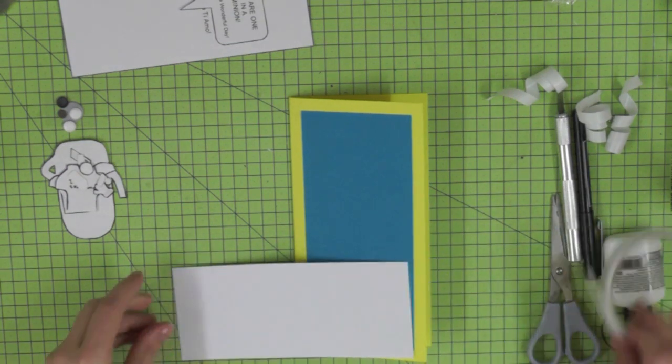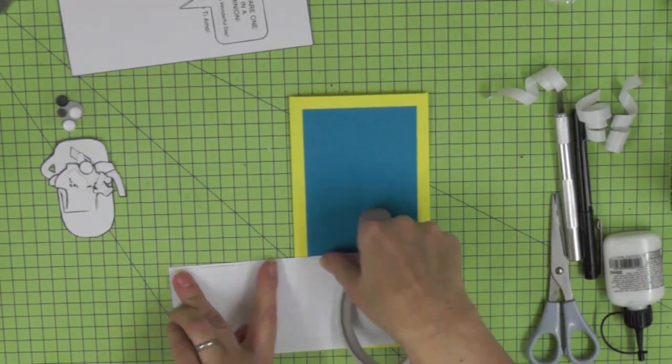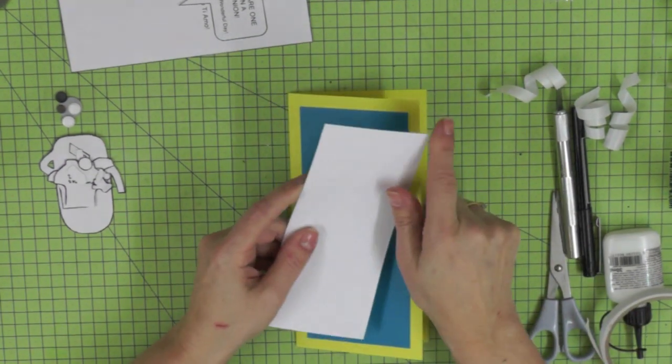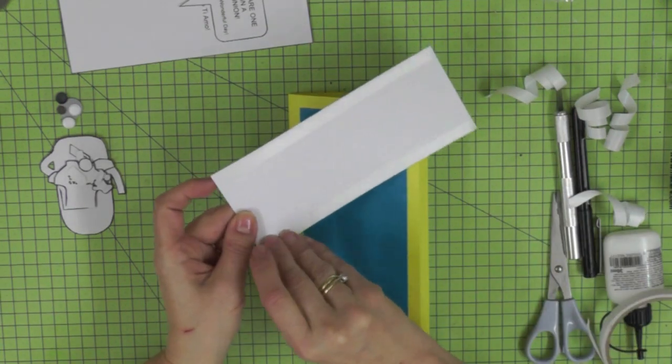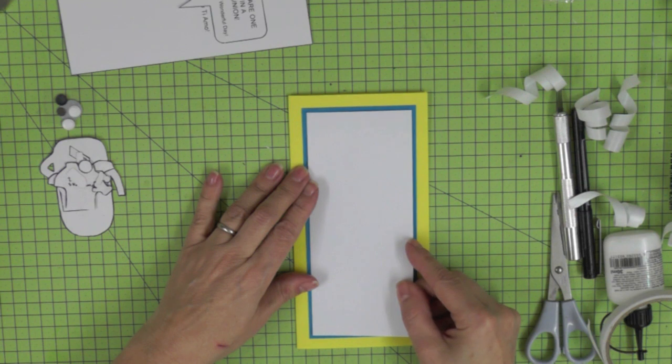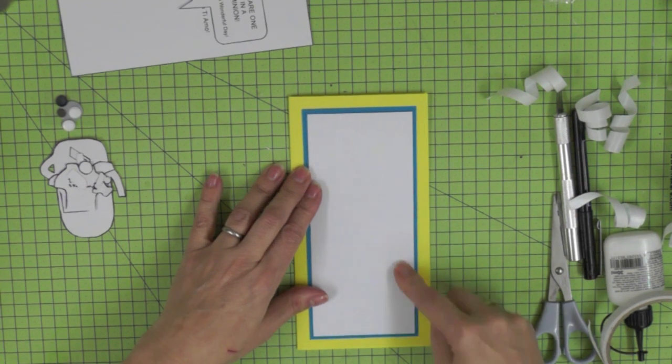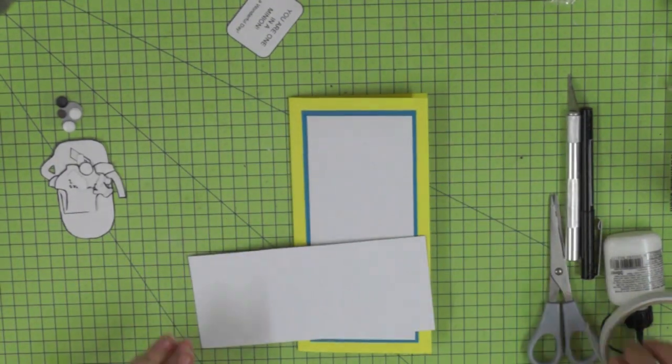Next for the front of the card is a piece of white cardstock. Again you could use foam pads if you wanted to, I'm using double-sided tape. It measures 3 inches by 7 inches and you're going to attach that centrally on the front of the card. This really is quite quick to put together in the first stages and then you can spend time with your little minion.